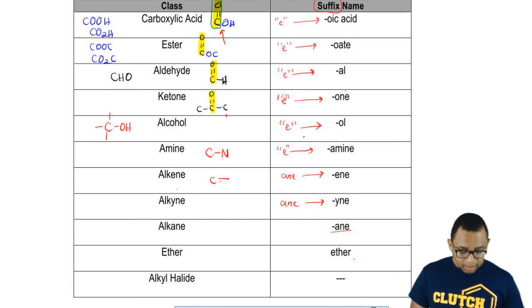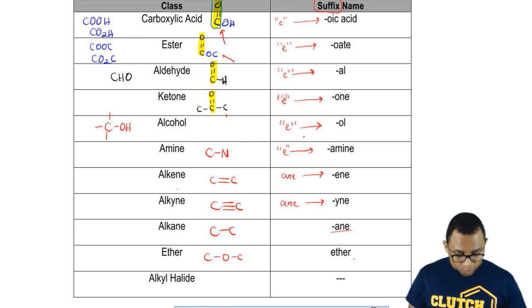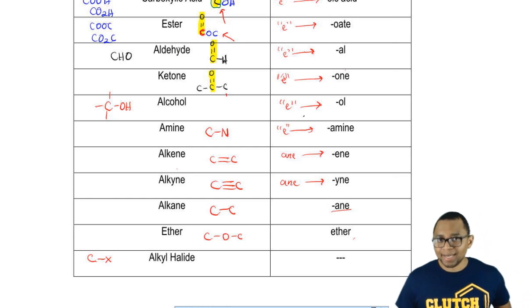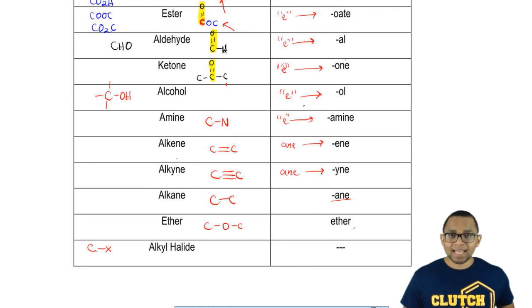We've already seen alkenes, C double bond C, alkynes, C triple bond C, alkane C single bond C. Ethers are COC, not to be confused with an ester which is also COC, but this C has a double bond O as well. Then an alkyl halide is just a carbon connected to a halogen. That halogen is usually represented by the variable X. X represents fluorine, chlorine, bromine, or iodine, groups in group 7A, the halogens.